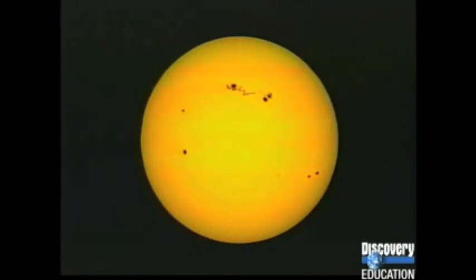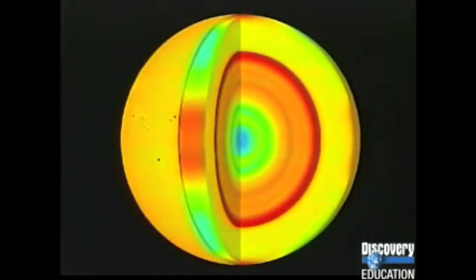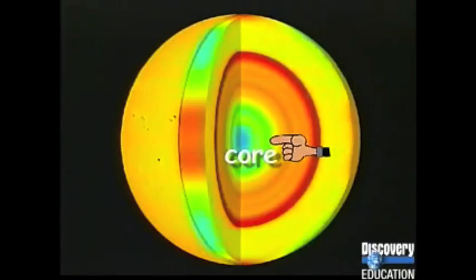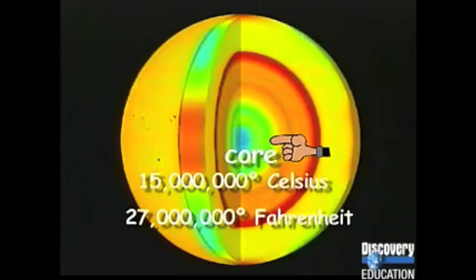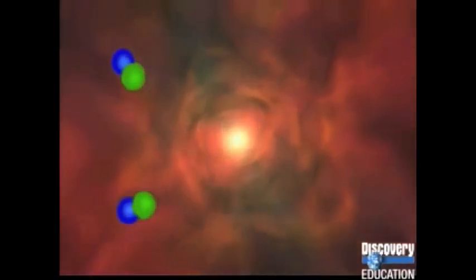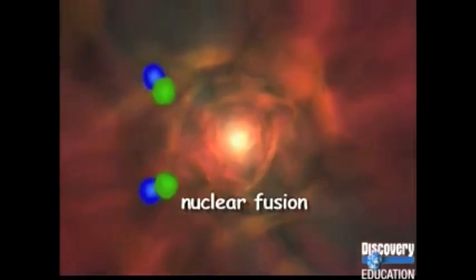In terms of size, the Sun is considered just an average-sized star. There are many stars that are hundreds of times larger than our Sun. The Sun is made up of layers, and over 90% of it is composed of hydrogen. The Sun's energy is created in its center, called the core. Temperatures in the core are estimated to be 15 million degrees Celsius, or 27 million degrees Fahrenheit. This extreme heat and pressure have a tremendous effect on the hydrogen atoms, which are combined or fused together into helium atoms. This process is called nuclear fusion, and it releases an enormous amount of energy.